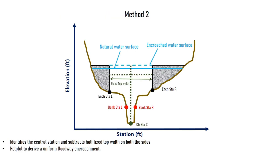In method 2, we have to choose a fixed top width for the floodway. The algorithm will find the center station and subtract half of the chosen top width to determine the encroachment stations.